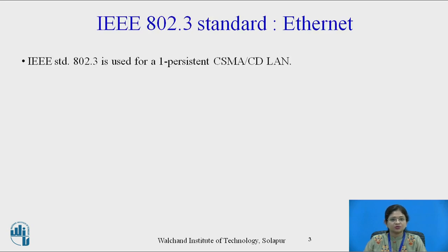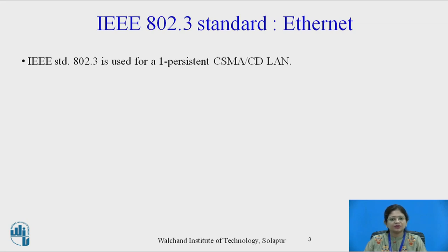IEEE standard 802.3 is used for the 1-persistent CSMA/CD LAN. CSMA/CD stands for Carrier Sense Multiple Access with Collision Detection. In this protocol, when a station wants to send a frame, it senses the medium — it listens to the channel. When the medium is idle, it immediately transmits the frame, meaning 100% transmission probability. If the channel is busy, it waits until it goes idle.